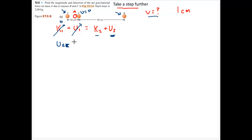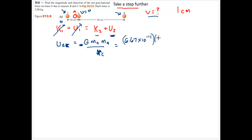The potential energy from C is negative big G times mass of C times mass of A divided by the radius to C — not squared this time. Plugging in: 6.67 times 10 to the negative 11th, mass of C is 2, mass of A is 2, and the radius is 0.09 meters. This gives negative 2.69 times 10 to the negative 9 joules.